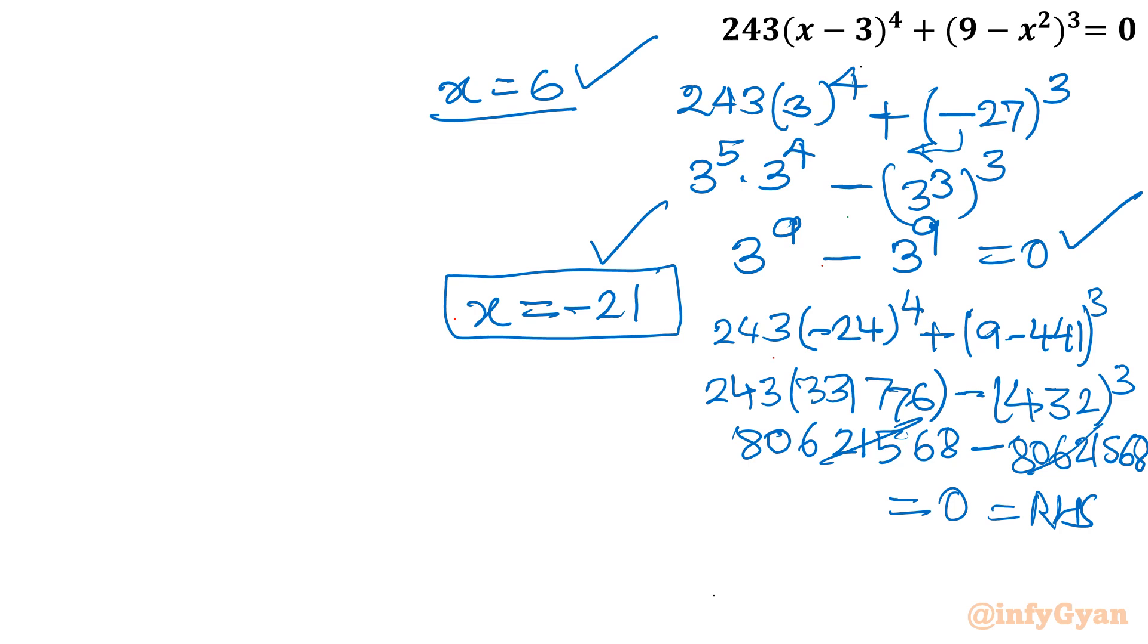So our final solution is 3 with multiplicity 3, 6, and minus 21. All 6 values for the given hexic equation. I hope you like this video. Thank you so much for watching. Do not forget to like, share and subscribe. Bye-bye till next video. Good luck.